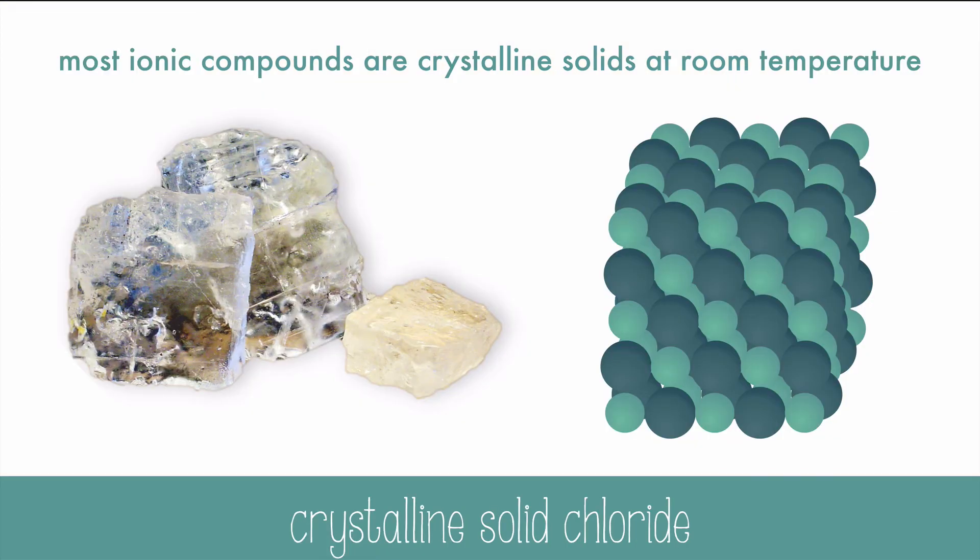Most ionic compounds are crystalline solids at room temperature. The structure of the ionic compound at the atomic level plays a role in the crystalline structure that you can sometimes even see with the naked eye, like in these sodium chloride crystals.